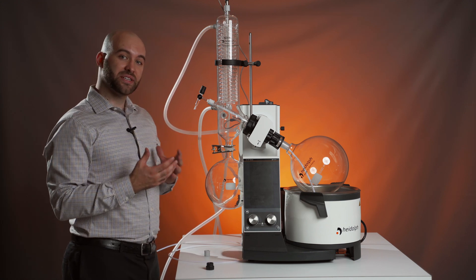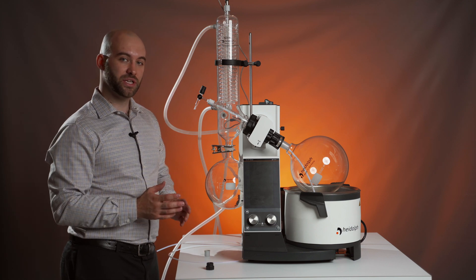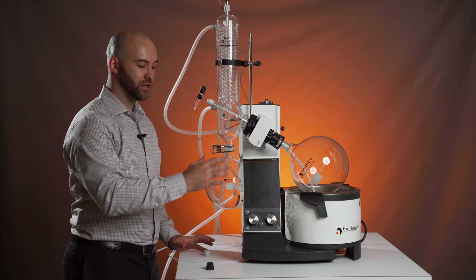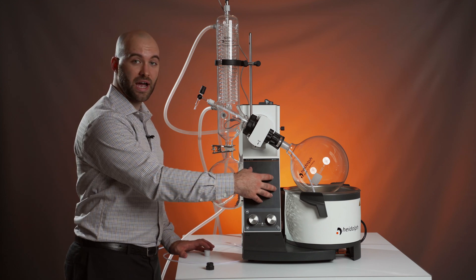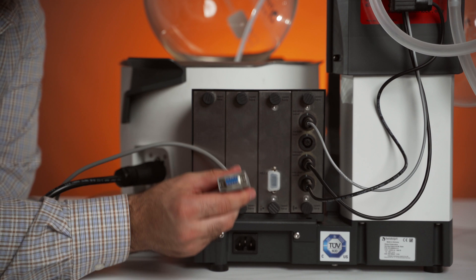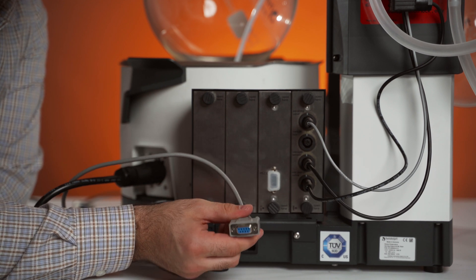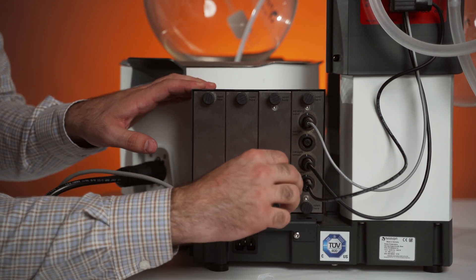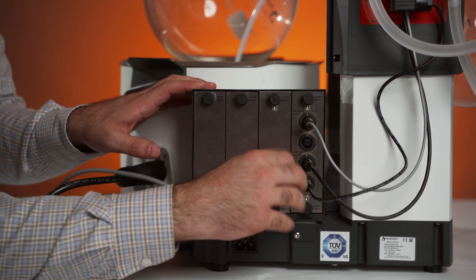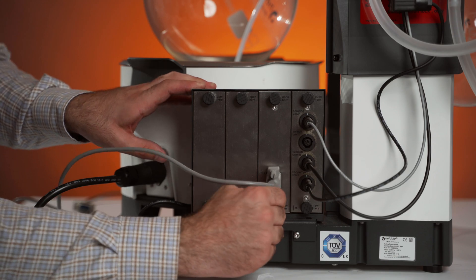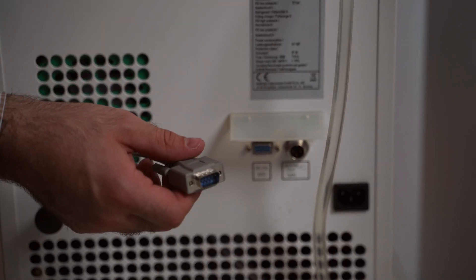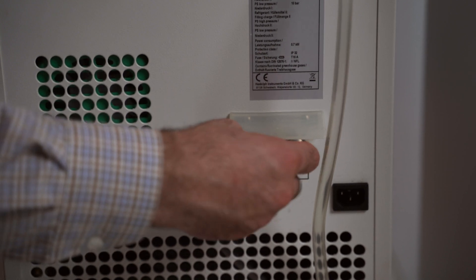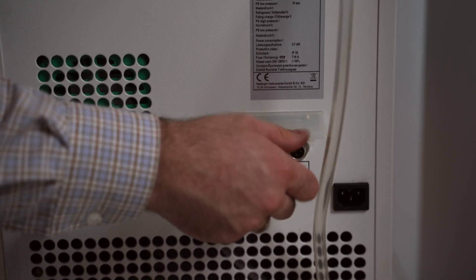The third accessory that is commonly used with the rotary evaporators is an RS-232 cable that will connect your HiVap to your chiller so you can operate your chiller's cooling parameters from your HiVap ultimate panel. First, we're going to connect our RS-232 cable to the control box right here and clamp it down with the screws. The other end of your RS-232 cable will connect to the back of the chiller right here and screw in as well.